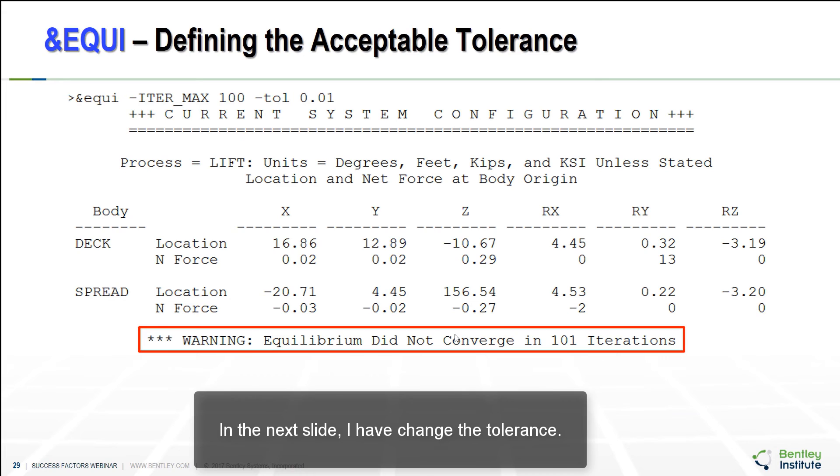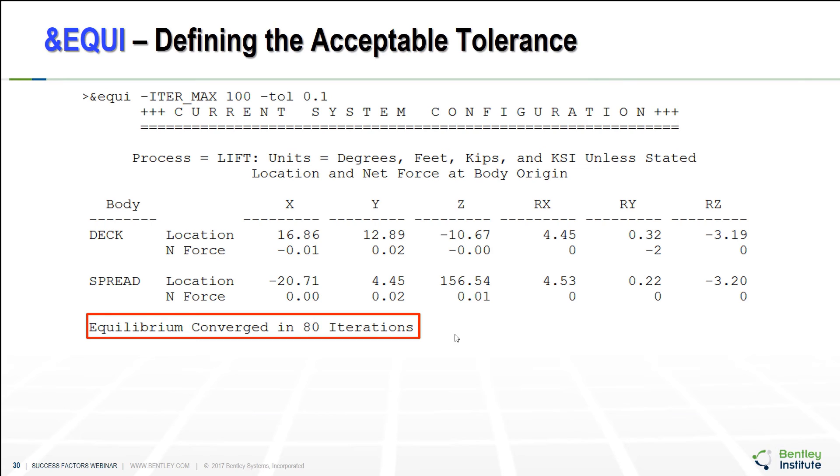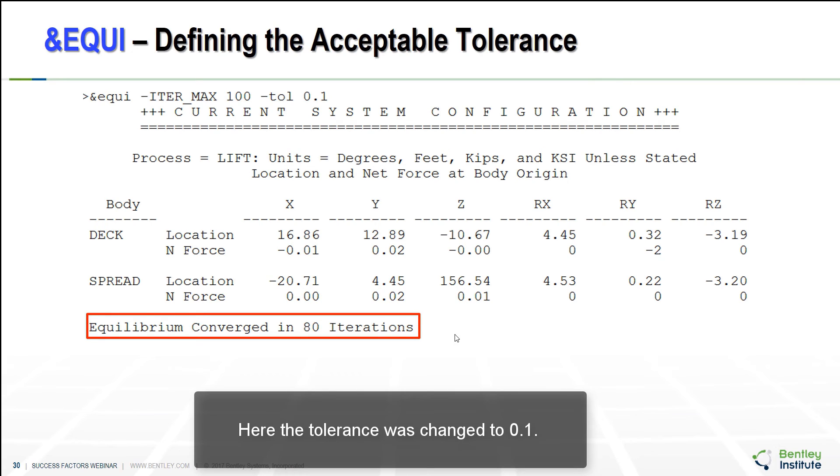The next slide I change the tolerance. However for this case being presented, the engineering judgement is required. Here the tolerance was changed to 0.1. There is the acceptable tolerance has been found. However to define the acceptable tolerance we need a judgement based on your experience and your knowledge.